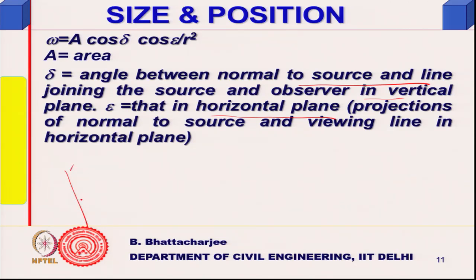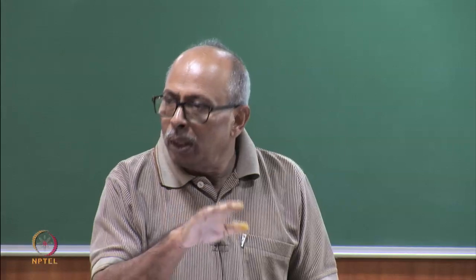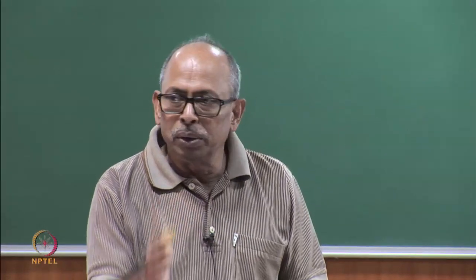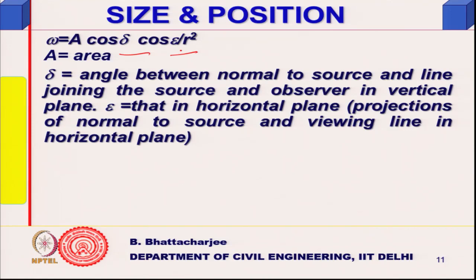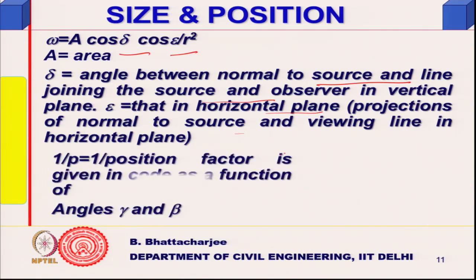From your source, there will be two angles — one in the vertical plane and another in the horizontal plane, an azimuthal angle as well as an altitude angle. Delta is the angle between the normal to the source and the line joining source and observer in the vertical plane; epsilon is the angle between the projection of the normal to the source and the viewing line in the horizontal plane. That is how the projected area A is found out.